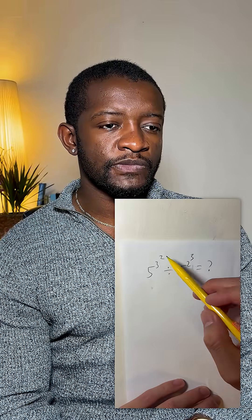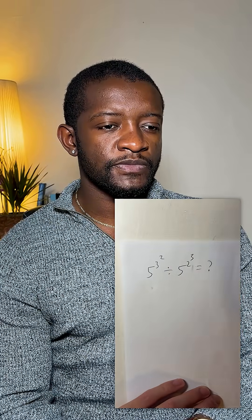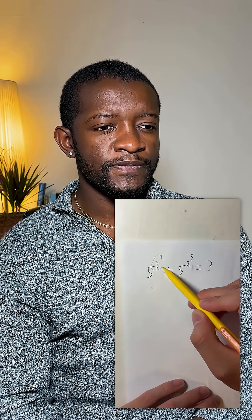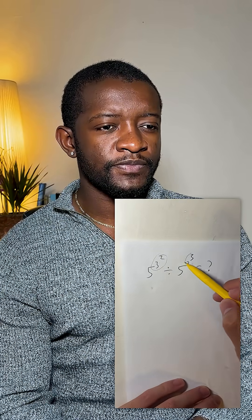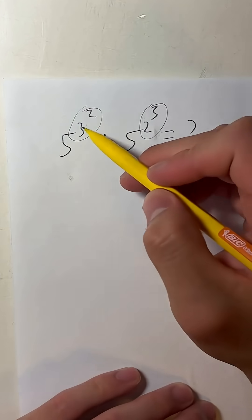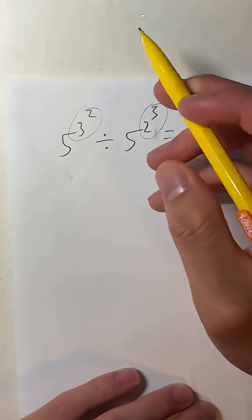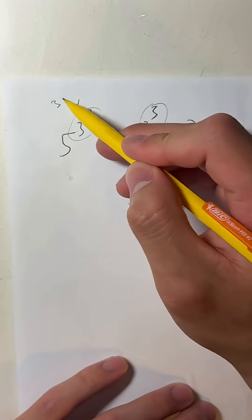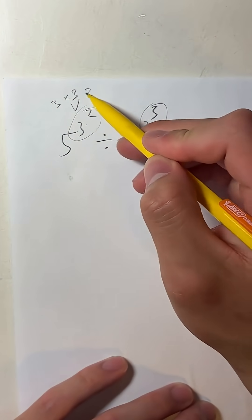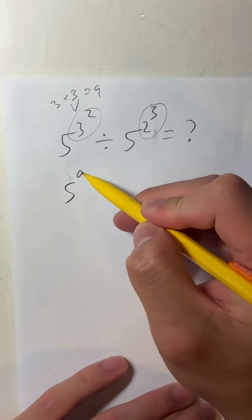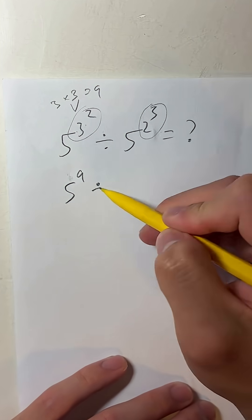What we have to do is go from top to bottom. So in this case, we have to do 3 to the 2nd, as well as 2 to the 3rd, to evaluate each one. Now 3 to the 2nd basically means it's just 3 times 3, which is 9. So this becomes 5 to the 9th power divided by...